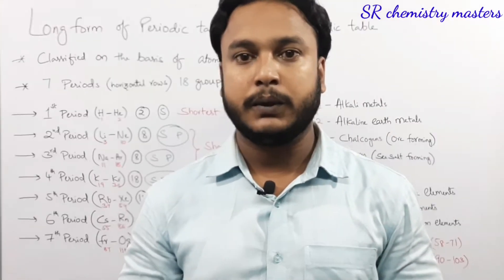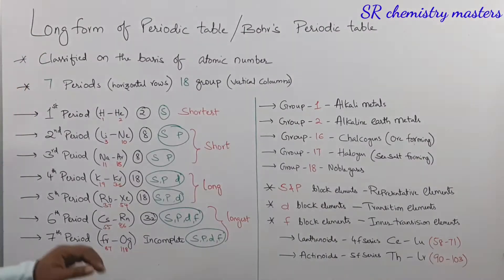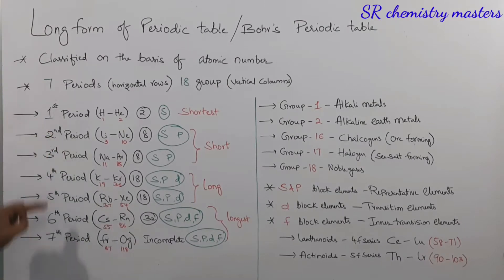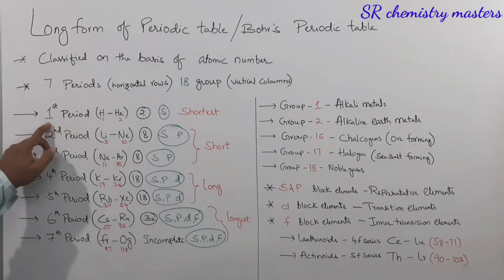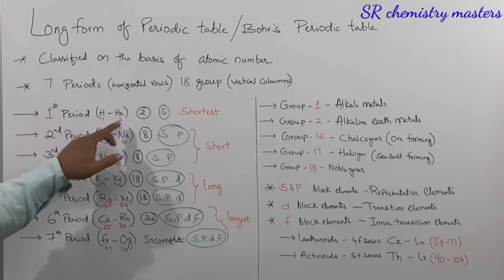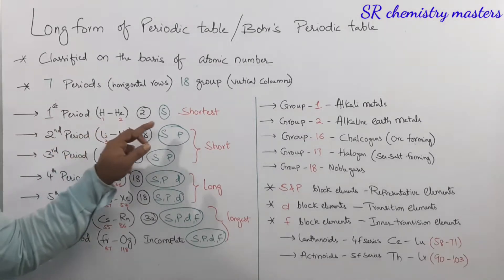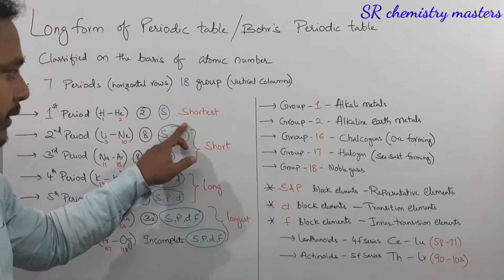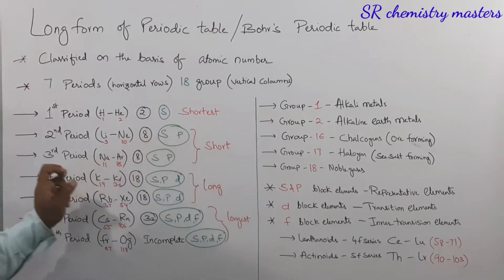If we see in detail regarding the periods, there are seven periods. The first period consists of only two elements — hydrogen and helium — and it is considered as the shortest period of the periodic table.